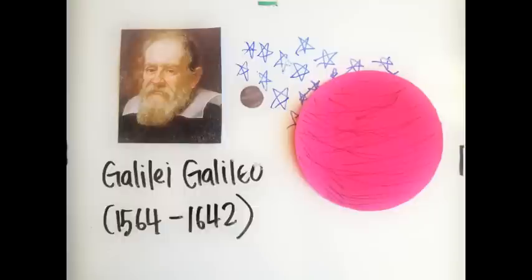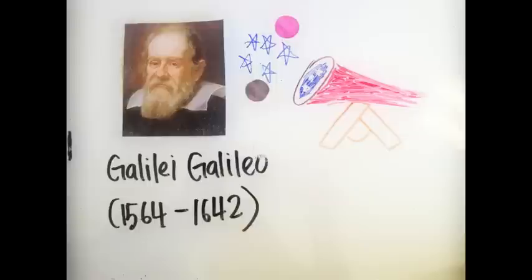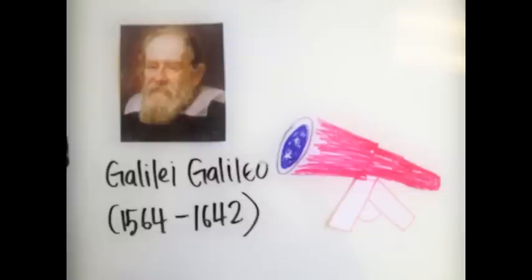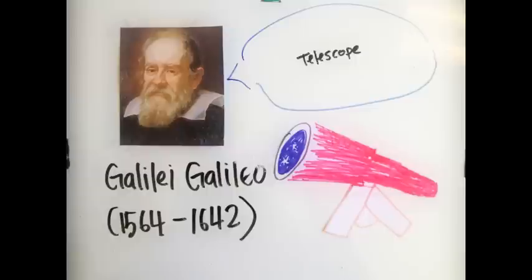Although his telescope invention wasn't the first telescope in the European history, the quality of his telescope was awe-striking and the way Galileo utilized his tools made him become a historical figure in the field of science. Even though he wasn't the first one to invent a telescope, he was the one named the telescope.